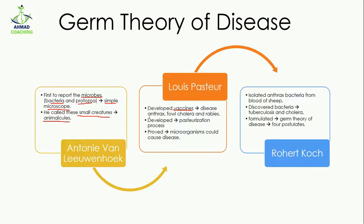After that, Louis Pasteur developed vaccines. The vaccines were prepared for diseases like anthrax, fowl cholera, and rabies. He developed these vaccines on the basis of the fact established by Antonie — that microorganisms can be found in simple samples or in disease samples.